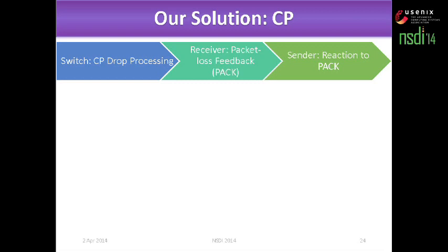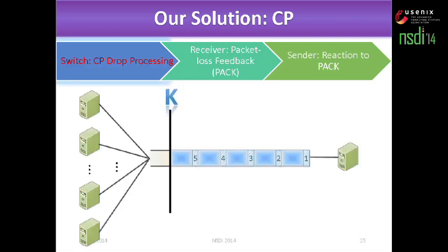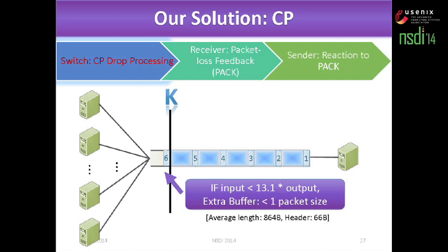I want to introduce my solution. We call this Cutting Payload — you can call it CP. There are just three steps. The first step is to use the switch to cut off the payload of new packets if the buffer is overflowed. You can see that packet six doesn't have the payload — we just store the header in storage. We can prove that we only need a little extra buffer to store these header-only packets.